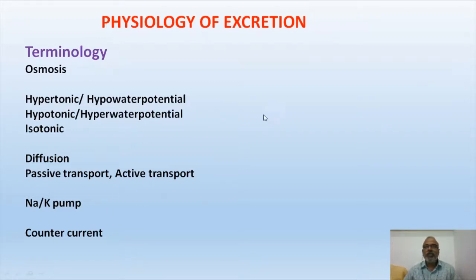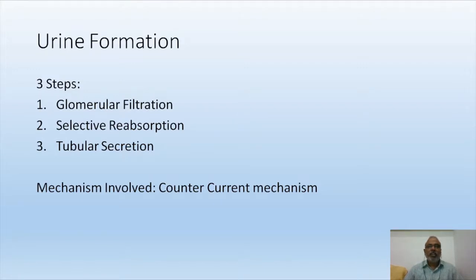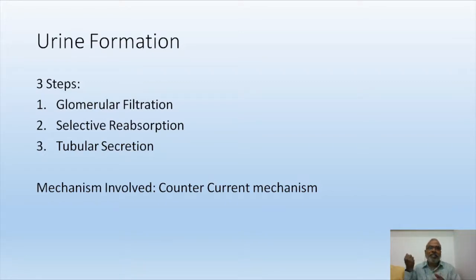All these terms are used in explaining the physiology of excretion. Urine formation in vertebrates occurs in three steps: glomerular filtration, selective reabsorption, and tubular secretion. Glomerular filtration is a process in which materials dissolved in water get separated from the blood. Selective reabsorption, also called tubular reabsorption, is a process in which useful materials are taken back.